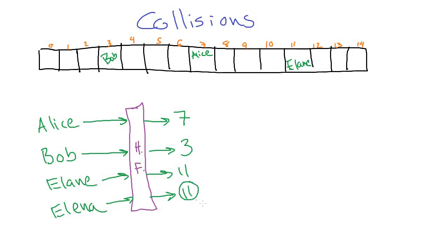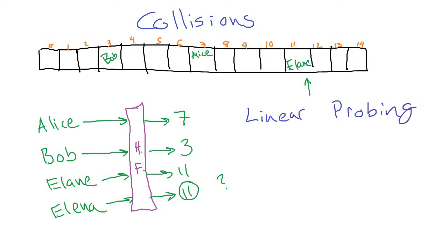The hash function is going to give us the same integer for Elena as it does for Elaine. We can't just stick Elena on top of Elaine and overwrite that value, because the hash table has to be robust to this — it has to be able to store both things. The most widely used solution is called linear probing, which is an odd choice of phrasing, but that's what it is.